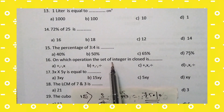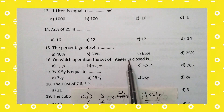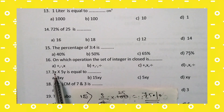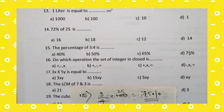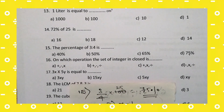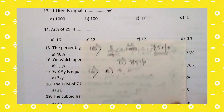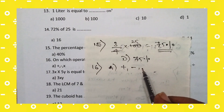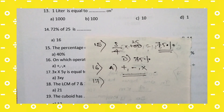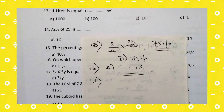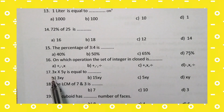16th question: on which operation is the set of integers closed? Integers include positive and negative whole numbers. Integers are closed under addition, subtraction, and multiplication — but not division, since dividing two integers does not always give an integer. For the 16th question, option A is the right answer.